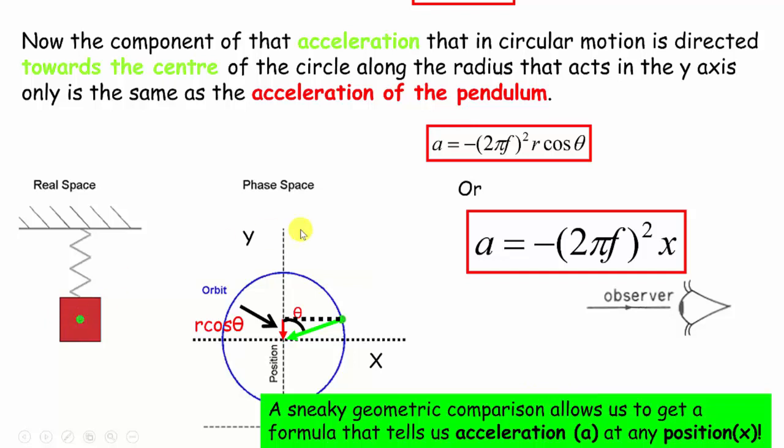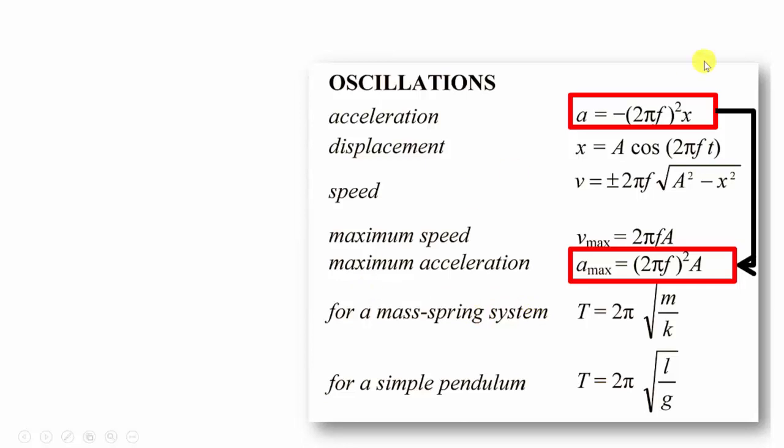So really we've just managed to get a formula for the acceleration of something in simple harmonic motion if we know its position using a geometric comparison. We could really say we've got two equations: an equation for acceleration given that we know its displacement from its equilibrium position, and also the maximum acceleration.